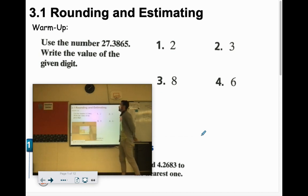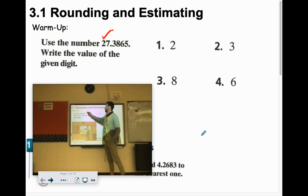So use the number 27.3865. Write the value of the given digit. So the two, right here, is in the tens place.